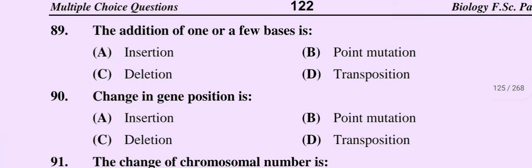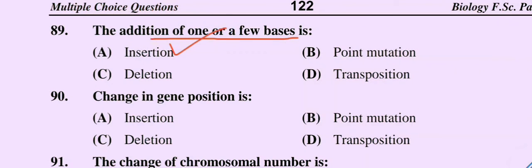Question number 89. The addition of one or more bases is: option A, insertion; option B, point mutation; option C, deletion; option D, transposition. The correct option is option A, insertion.